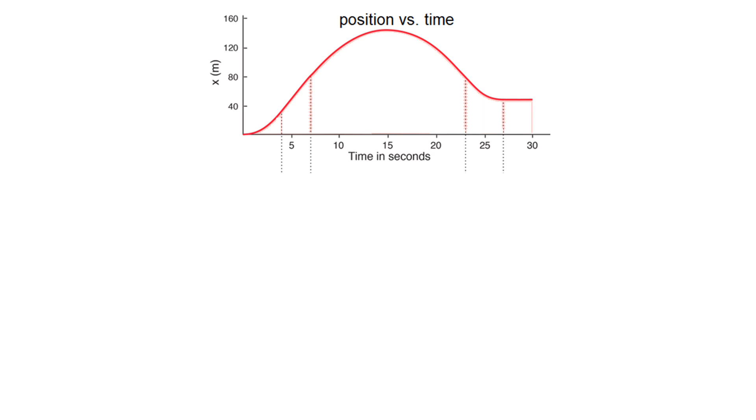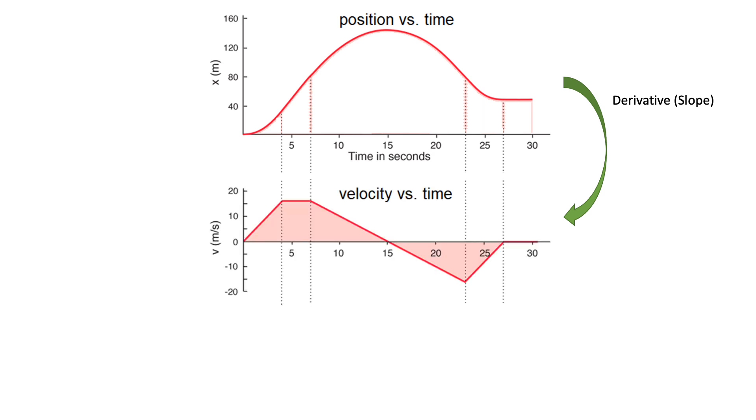Last time we learned that if you take a position versus time graph, calculate the derivative of it, or the slopes, you can get a velocity versus time graph. Here's how you can remember that. The definition of velocity is change in x over change in time. Change the deltas to d's, and there you go. You can see that velocity is the derivative of x based on time.